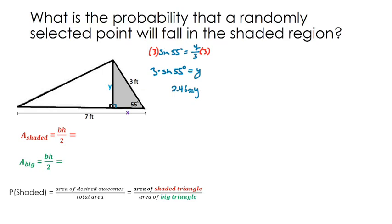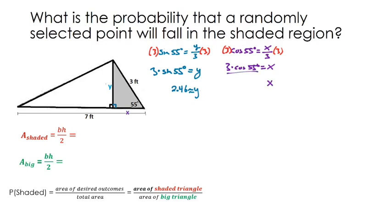Now for the x value — the base of the shaded triangle. We're relating the adjacent side to the hypotenuse, so that's cosine. The cosine of 55 degrees equals adjacent over hypotenuse. Multiplying each side by 3 gives x = 3·cos(55°) ≈ 1.72. So the base of our shaded triangle is roughly 1.72.